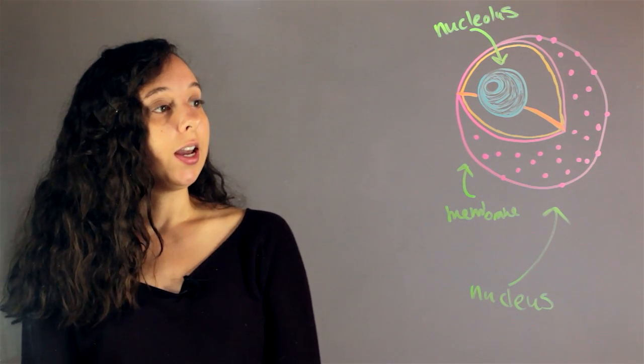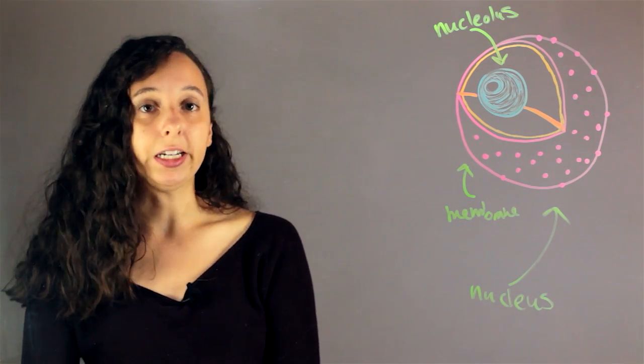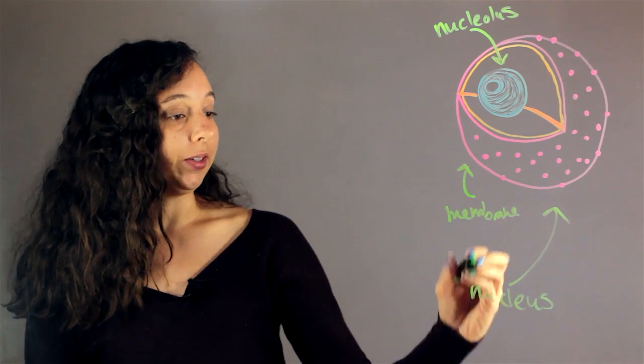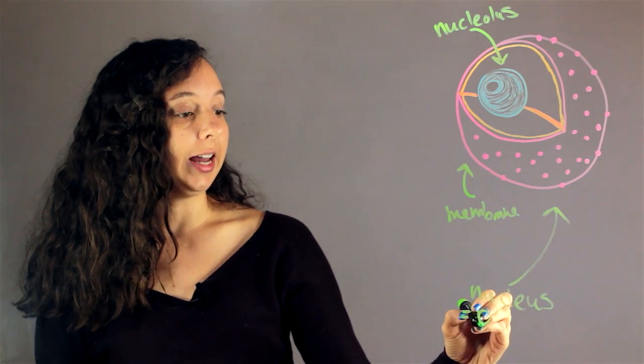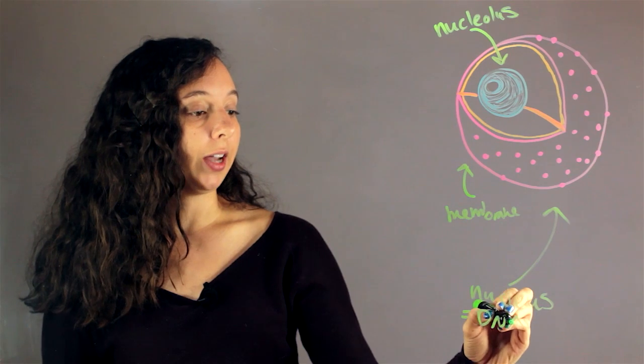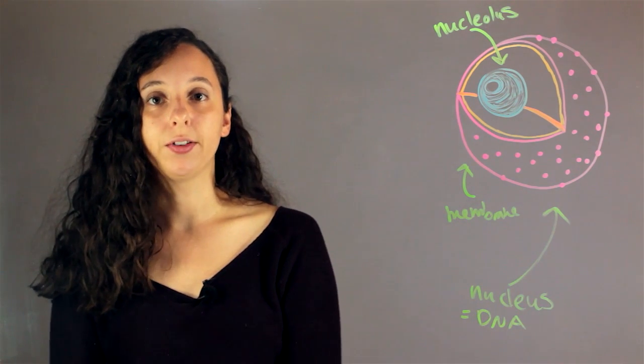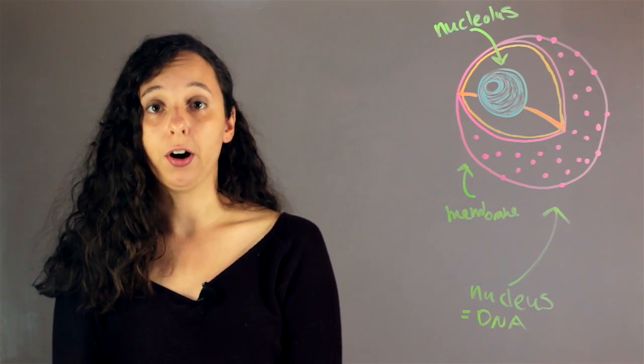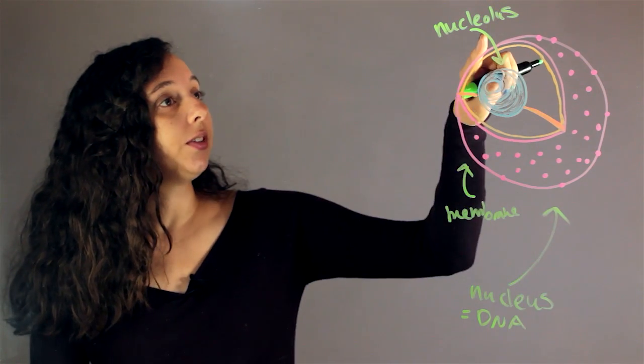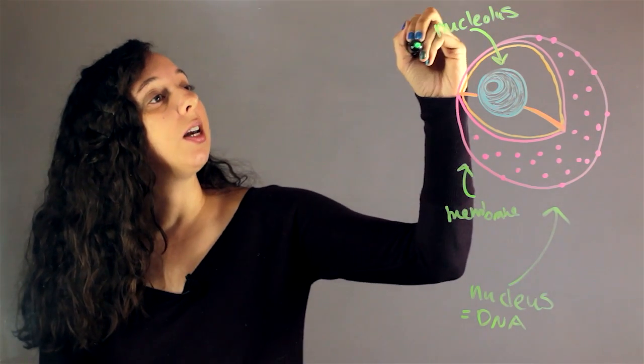And another big difference is the type of information that they each contain. So the nucleus has all the cells' DNA, which remember is kind of like a roadmap of how to make the cell and other parts. And the nucleolus is mostly RNA.